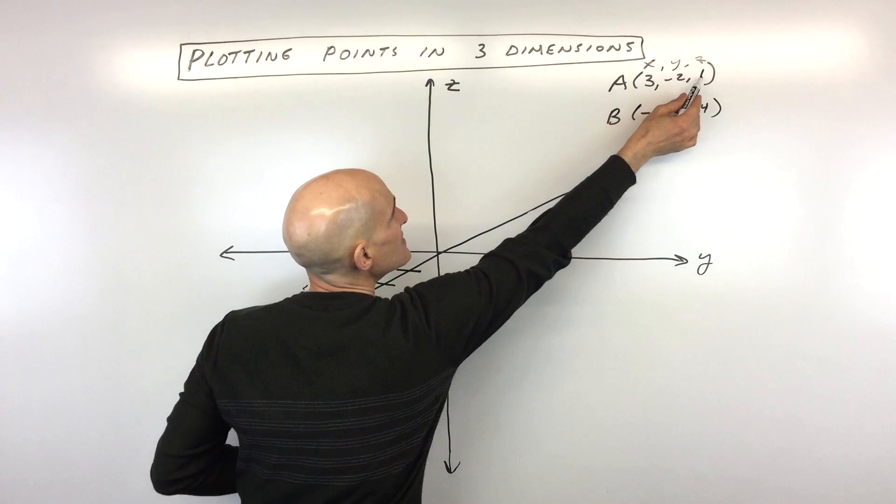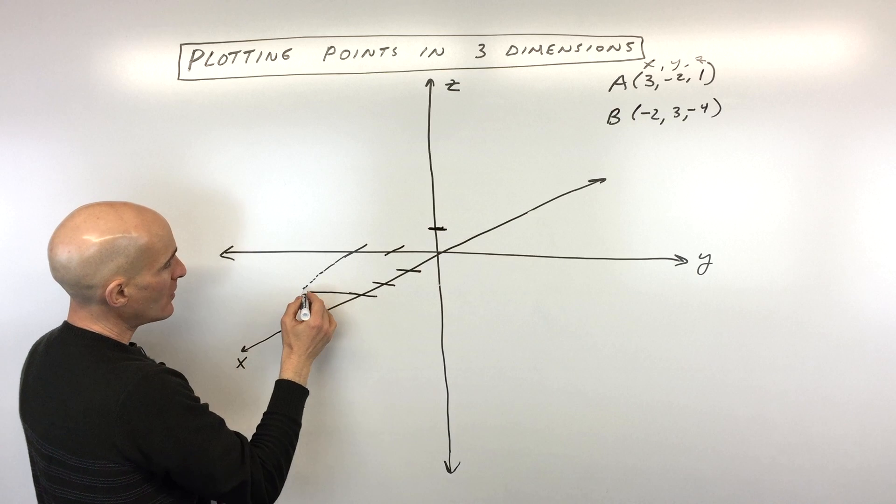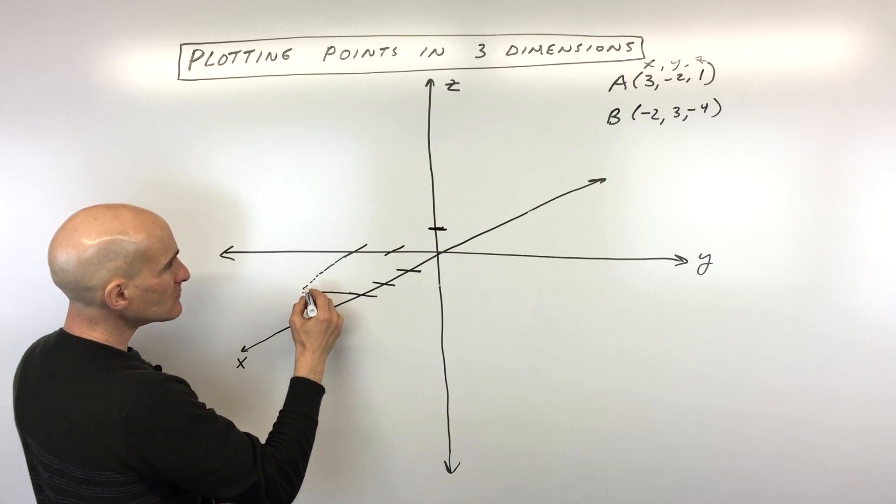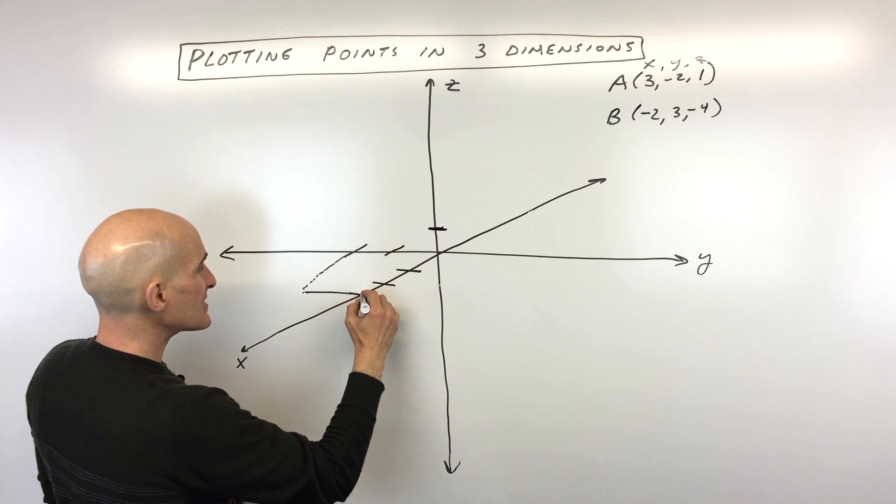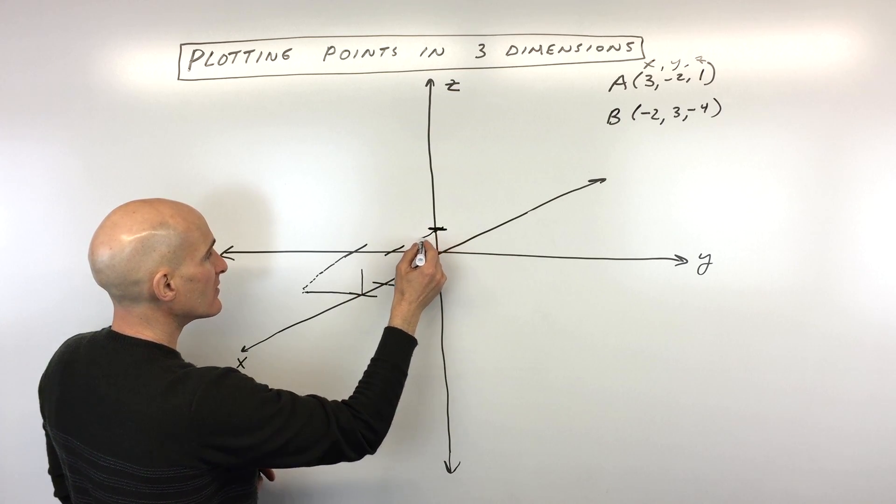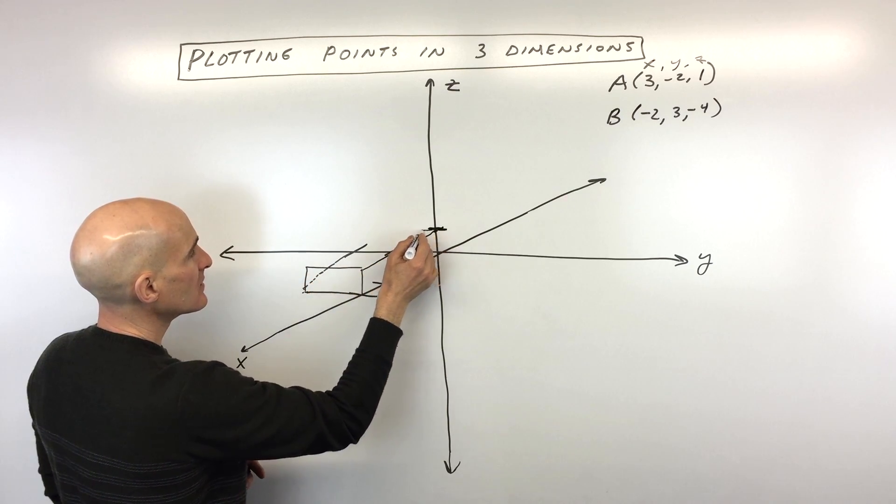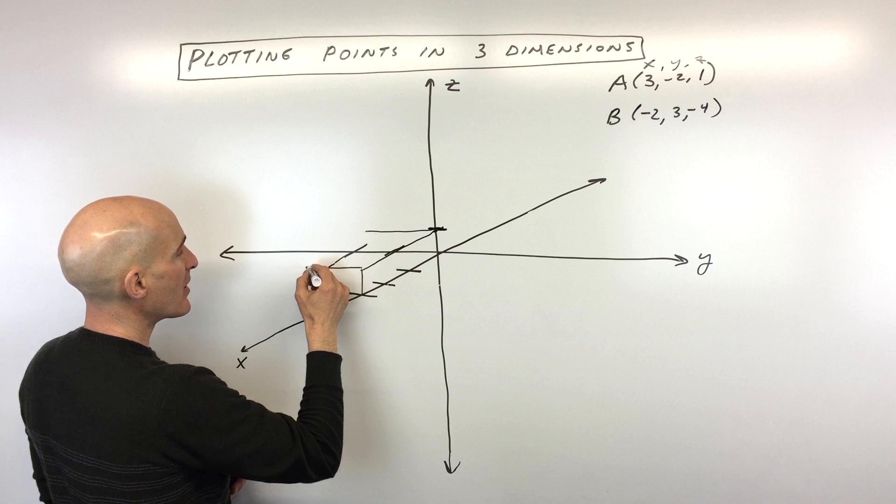And then over here, we've got the z-axis, which is one. So we're going up one on our z-axis like this. And what I'm going to do is draw this like a box, essentially. I'm going like this, going up one here. Again, I'm drawing a box like this, always drawing parallel.